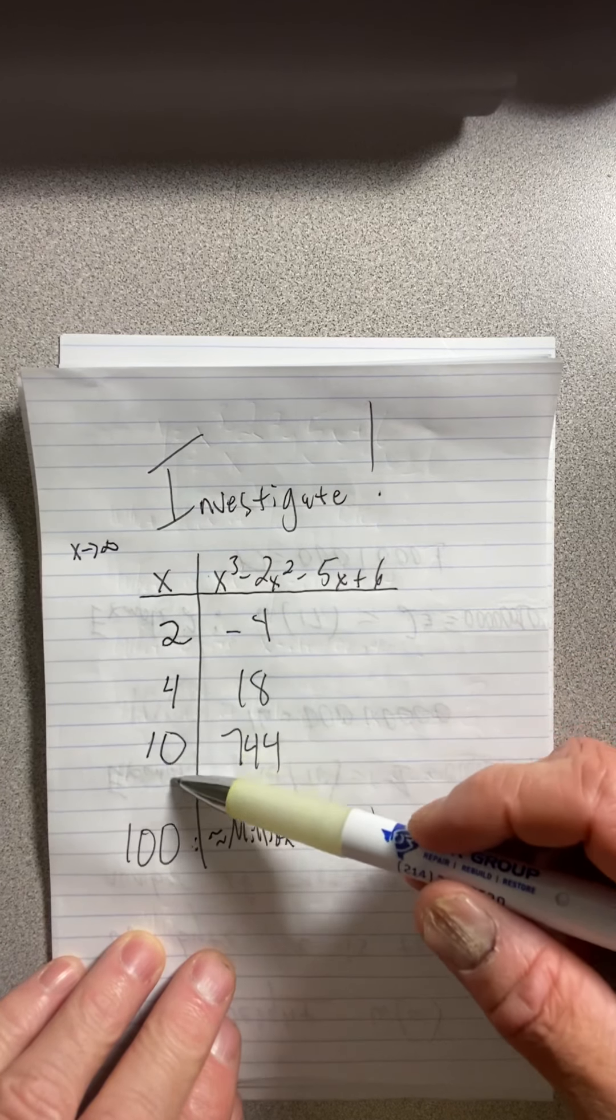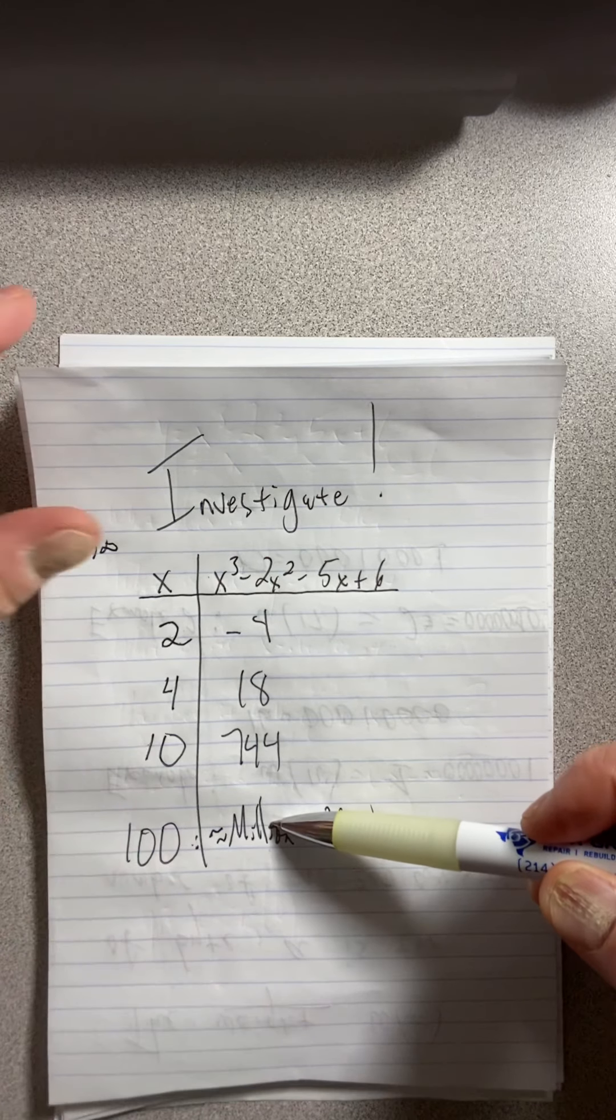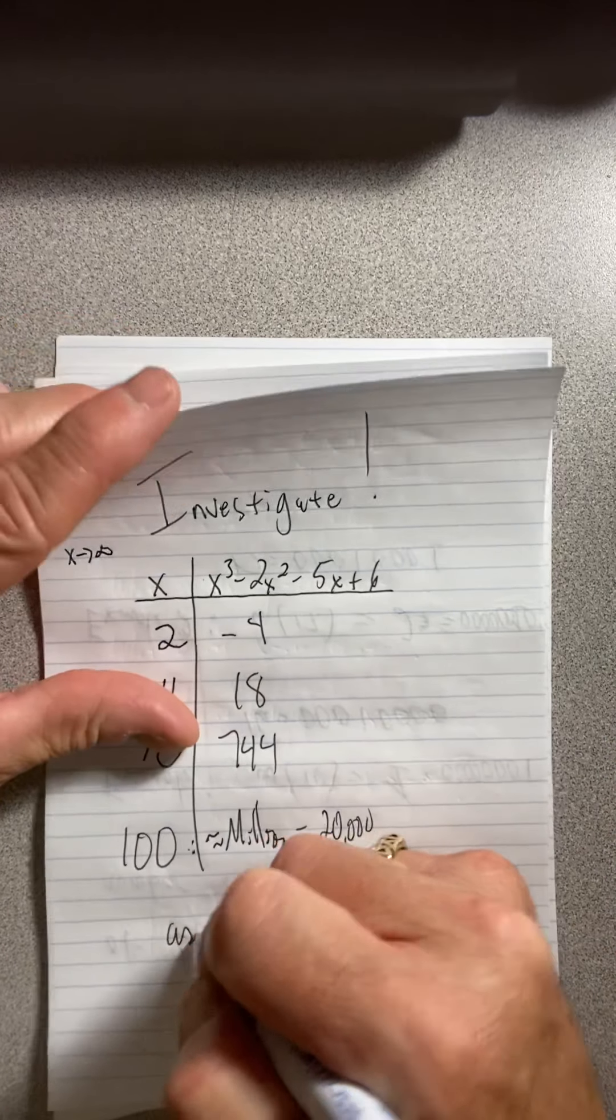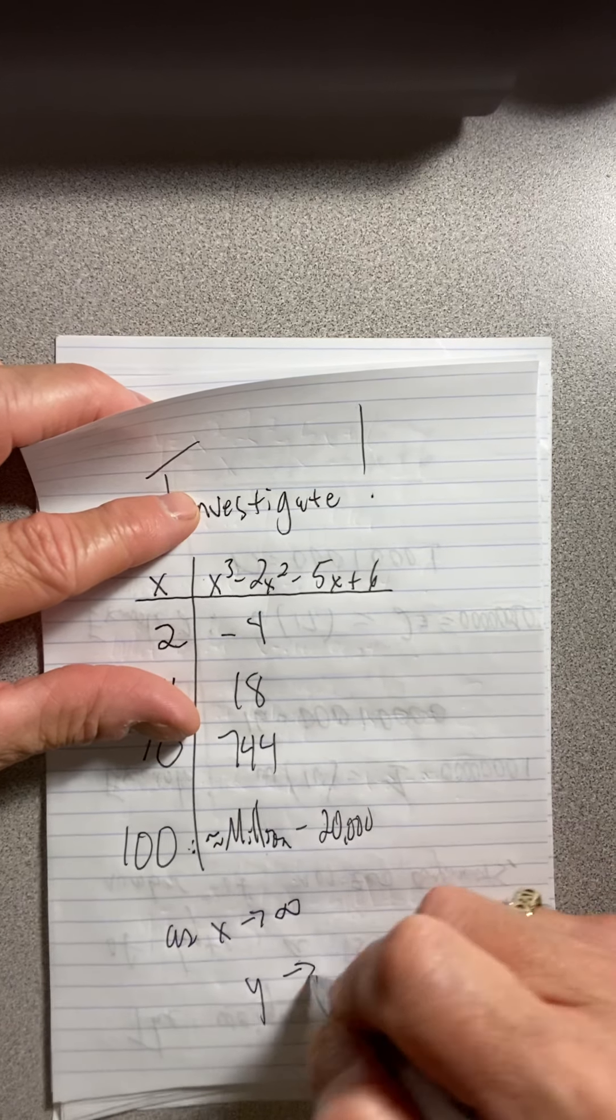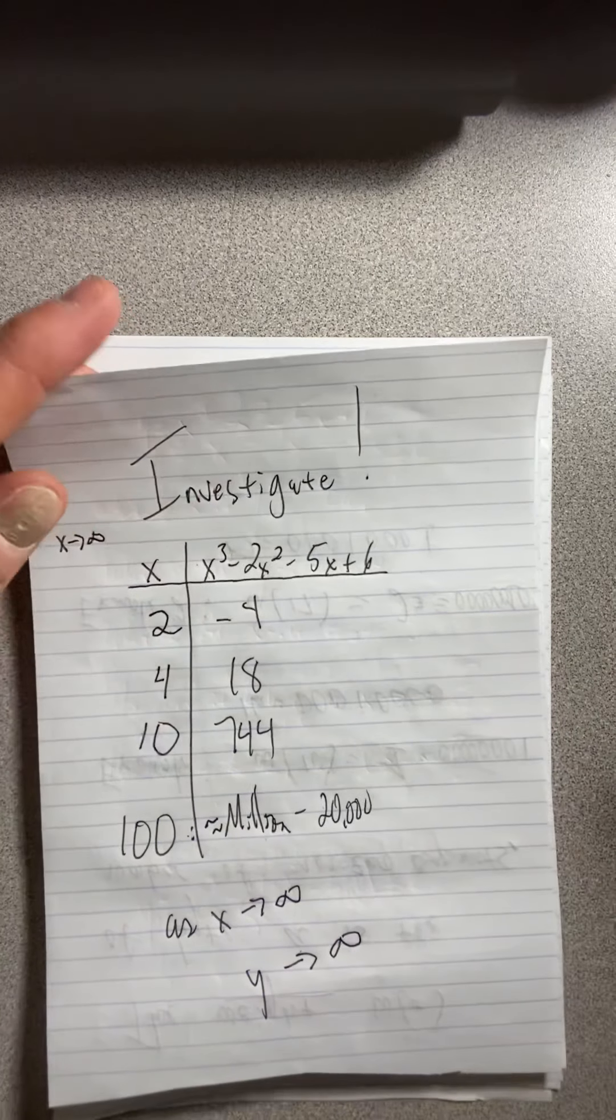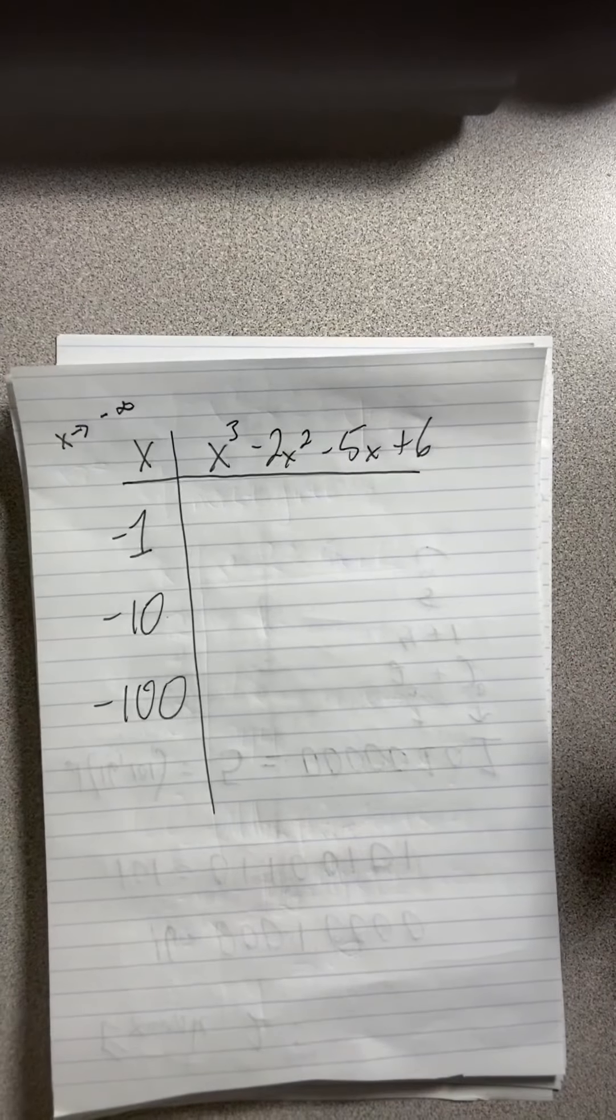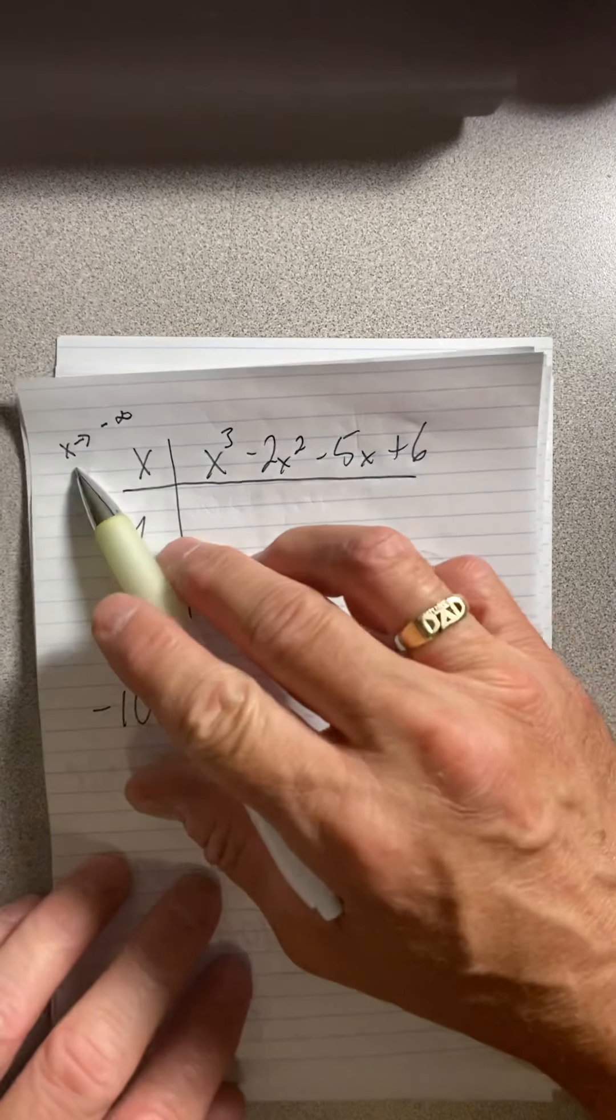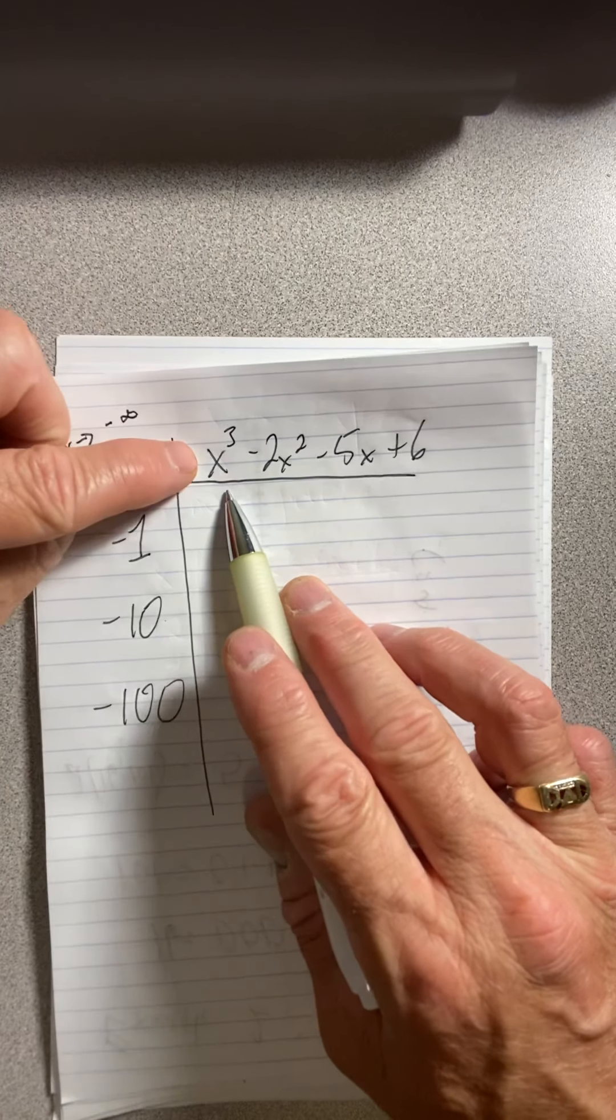So the question was, what happens to the cubic as the x values go to infinity? Well, what happens is its outputs get larger and larger. That's what happens. So as x goes to infinity, the y values are clearly going to get huge. That's what happens. Let's investigate.